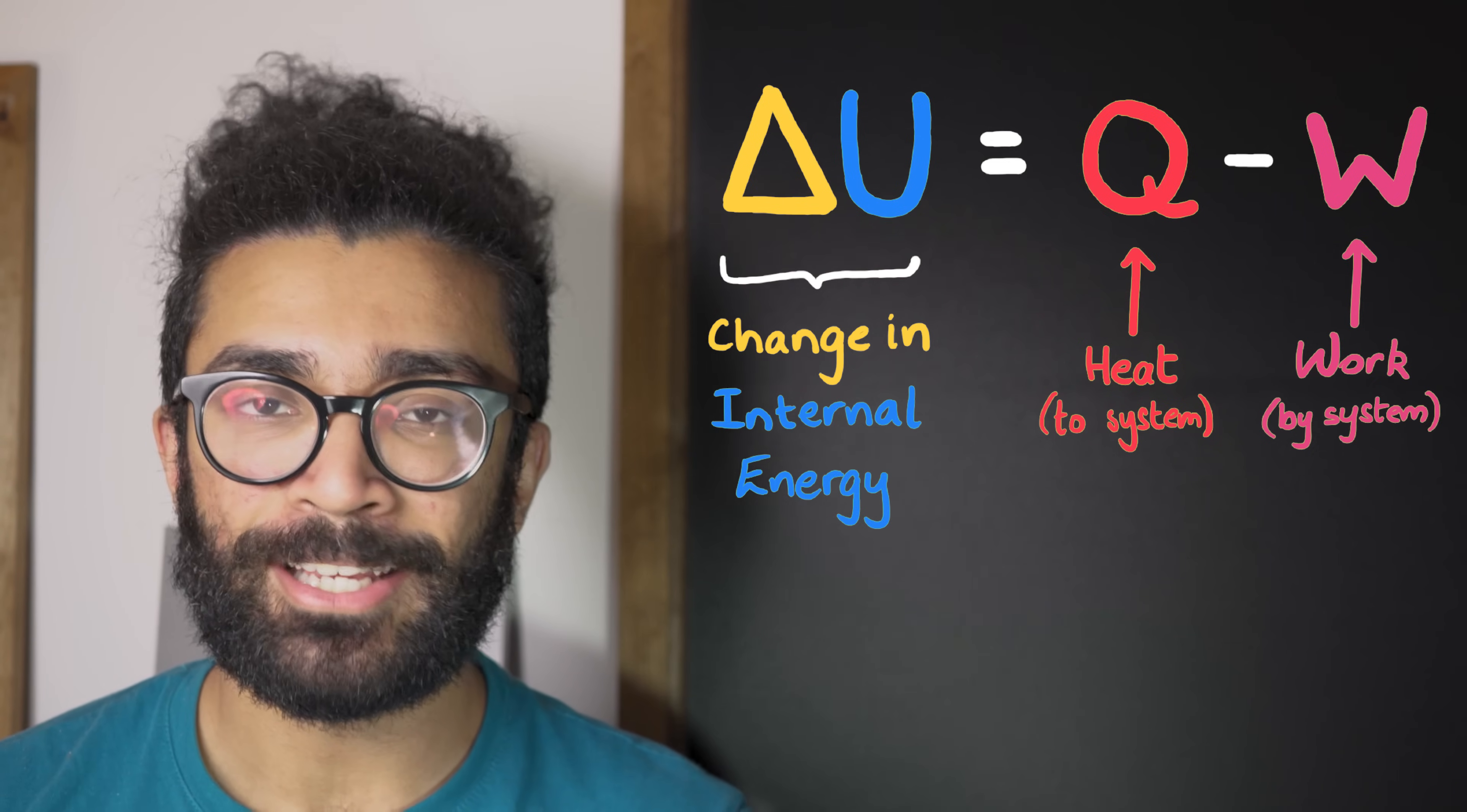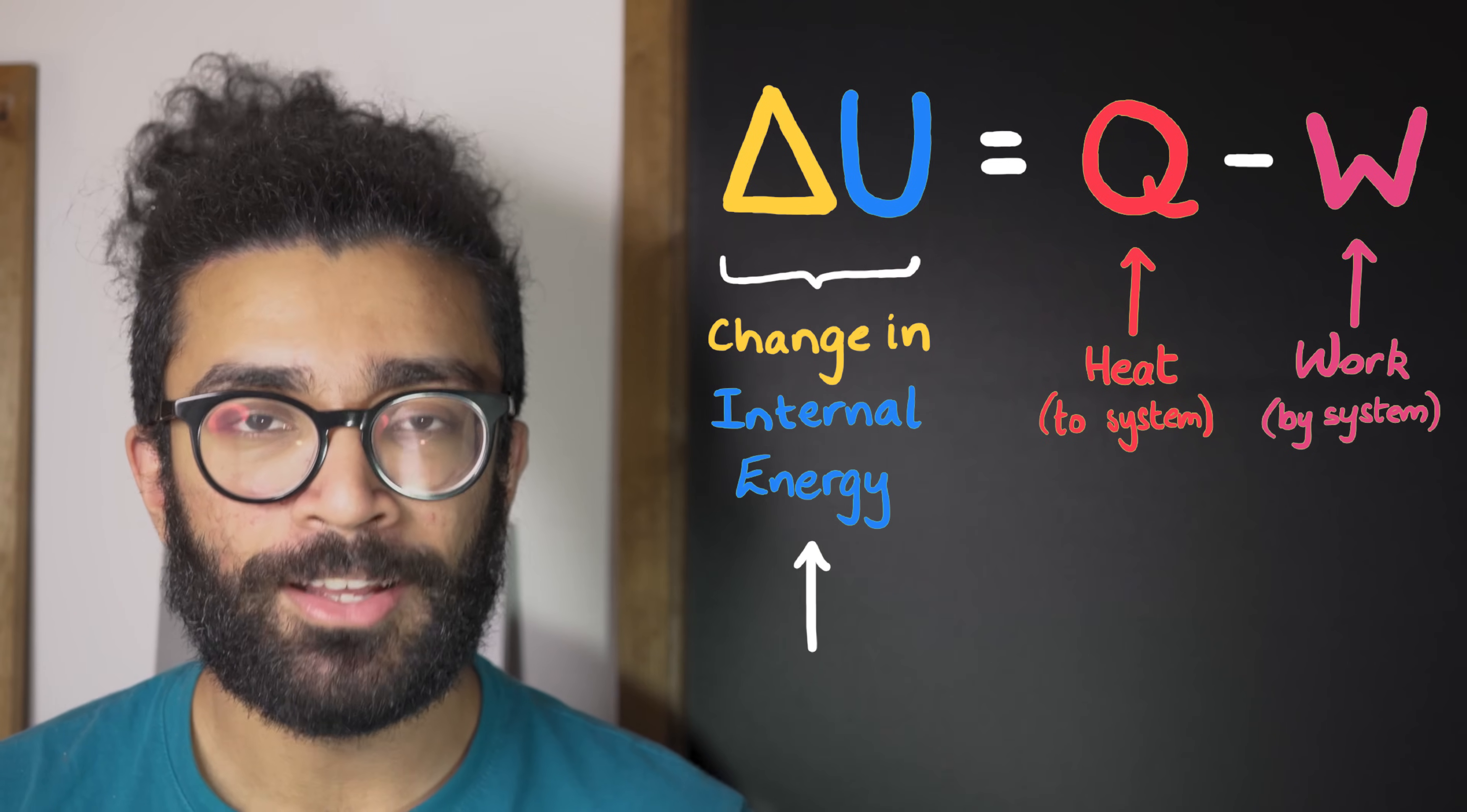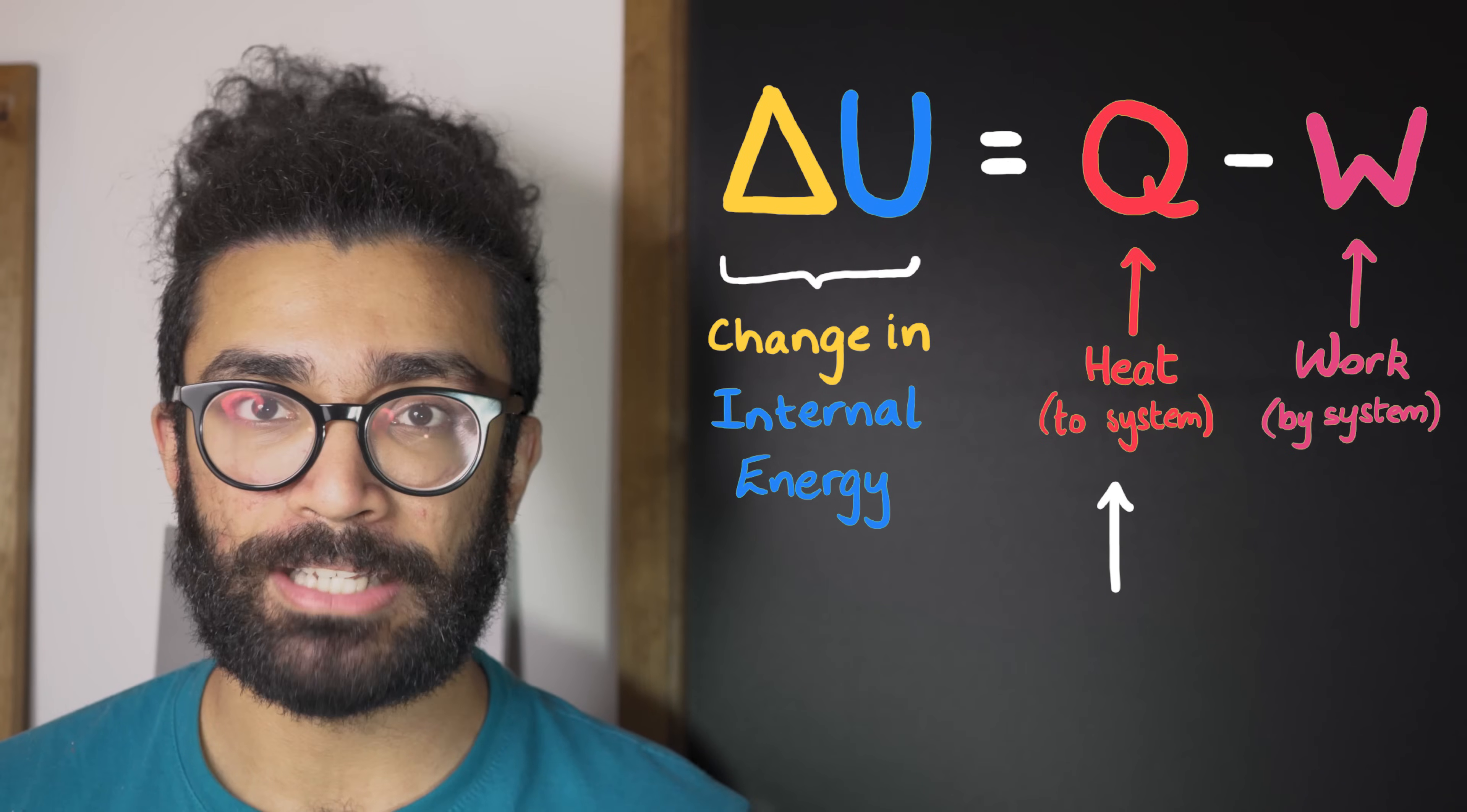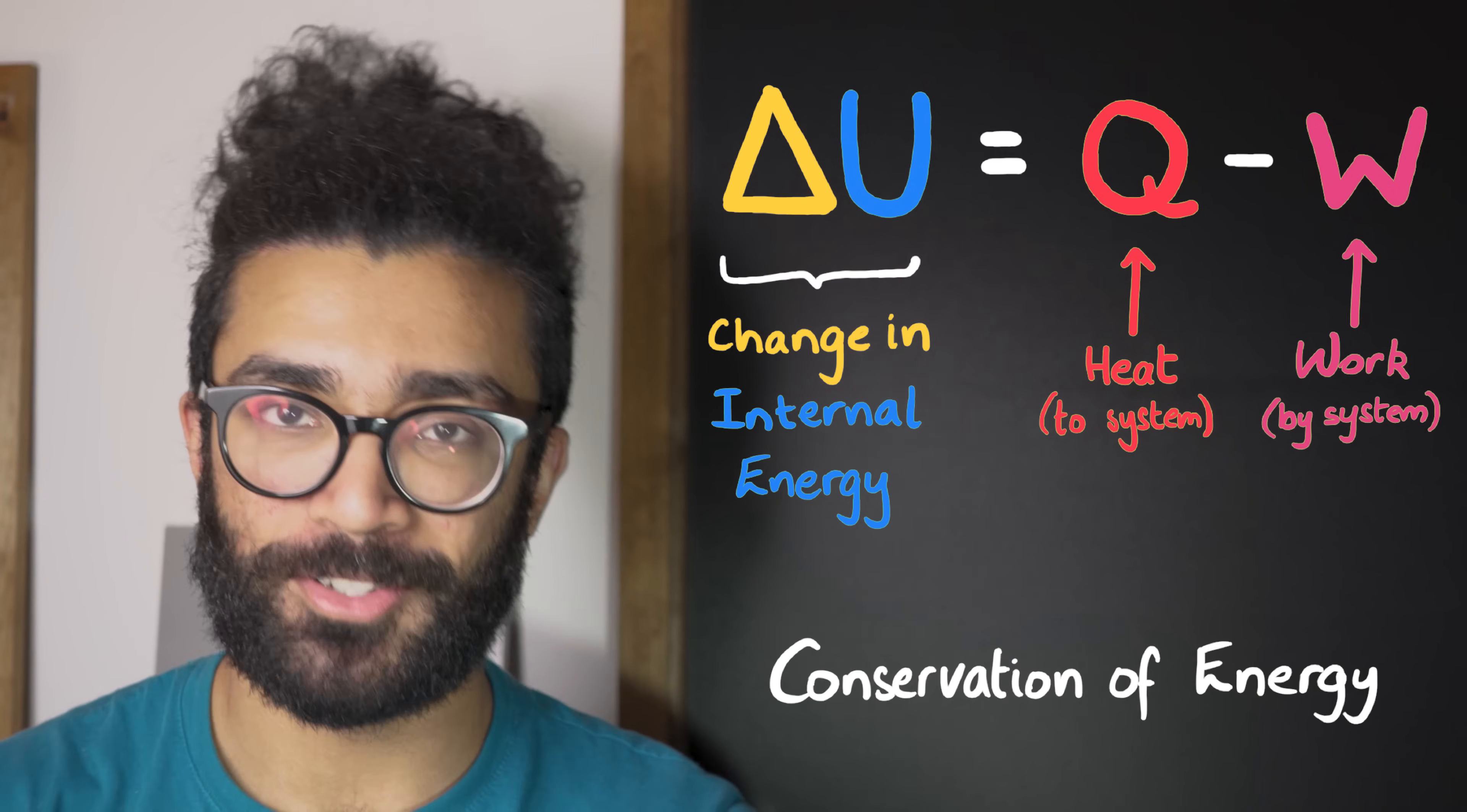So overall, the equation relating to the first law of thermodynamics reads the following. The change in the internal energy of our system is equal to any energy it gains as a result of heating, minus any energy it loses as a result of the work it does on its surroundings. This is why it's a version of the law of conservation of energy.